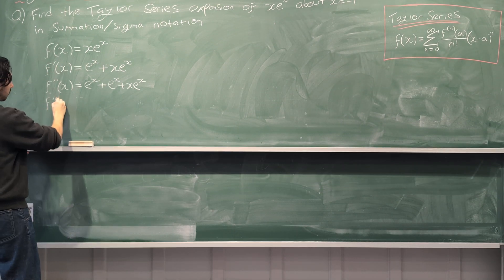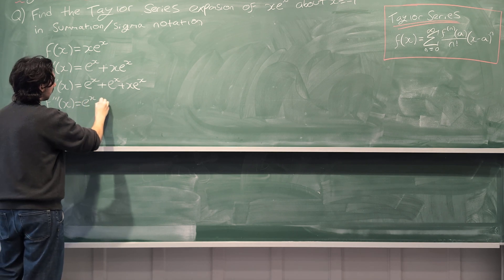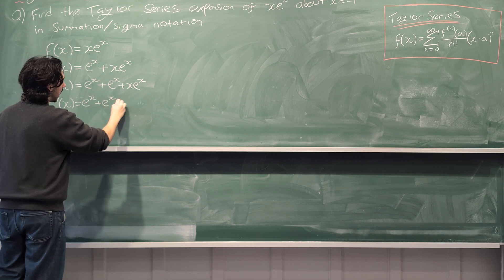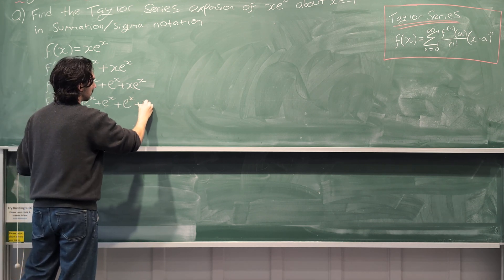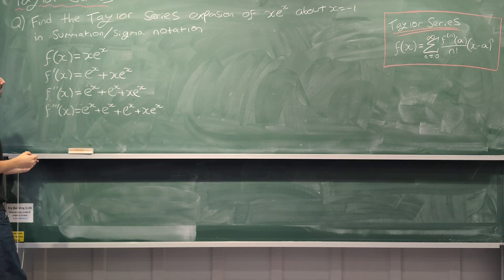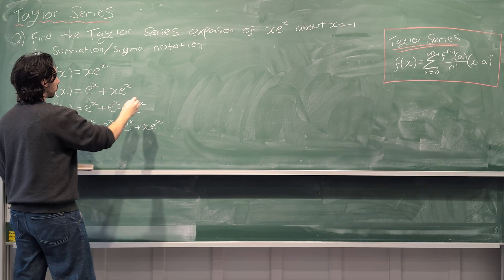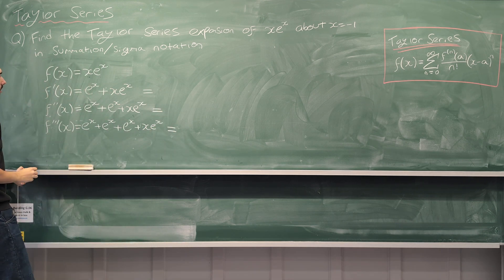Third derivative, one, two, three. So we have e^x plus e^x and again we have the same function again and this differentiates to e^x plus xe^x. And maybe you can see a pattern here. So I'm just going to write these three here in a simplified way and you can see what the pattern is.